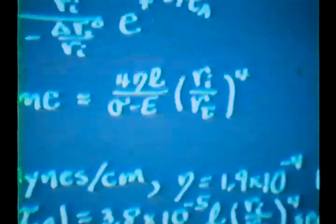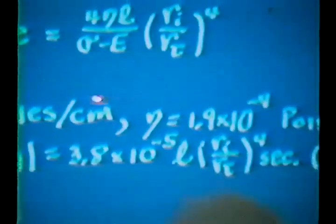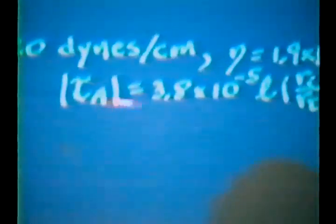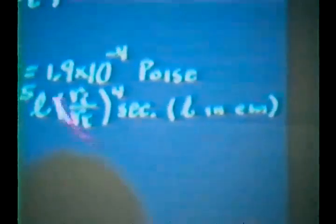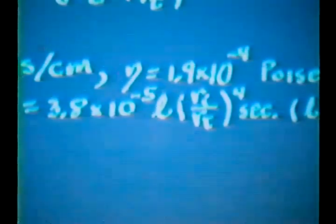You can calculate the relaxation time for this process. Now, suppose that this difference in magnitude is about 20 dynes per centimeter, and let's suppose you're dealing with a viscosity which might be of the order of magnitude of air, about 7 times 10 to the minus 5 poise. And under those circumstances, the relaxation time will be of the order of 10 to the minus 5 seconds. There are some ratios here, like the ratio of the radius of the bubble to the radius of the tube. Let's say that's the order of magnitude 1, and then the length of the tube in centimeters, let's say of the order of magnitude 1. Under those circumstances, the relaxation time will be of the order of 10 to the minus 5 seconds. Extremely fast.